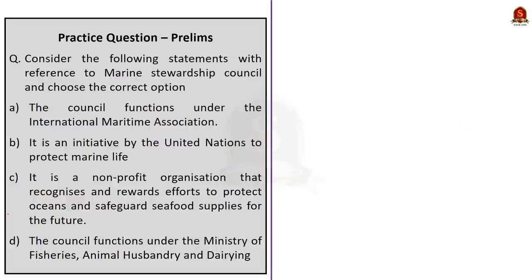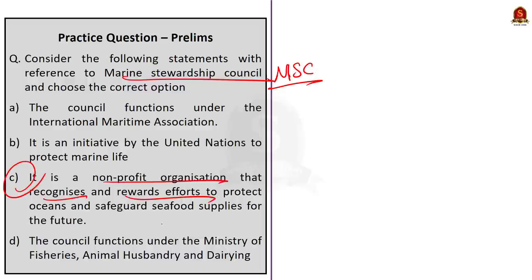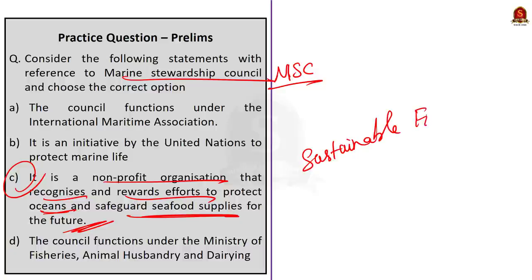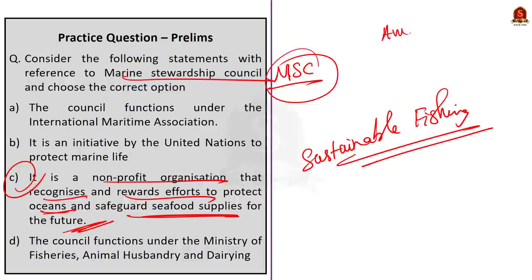The third question is regarding the Marine Stewardship Council. The answer is Option C — it is a non-profit organization that recognizes and rewards efforts to protect oceans and safeguard seafood supplies for the future. Note also that the council promotes sustainable fishing. For this kind of preliminary question, awareness of what the council is about is more than enough.